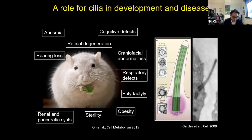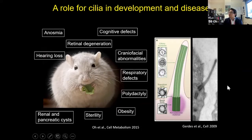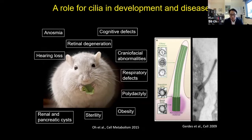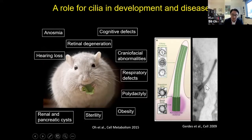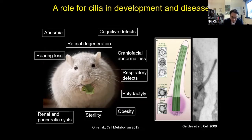Traditionally, over the last 10 years, my lab has had an interest in interrogating a role for the primary cilium in development and disease. This structure is shown here on the right — a cartoon depicting the microtubule structure and a transmission electron micrograph of what it looks like. It's approximately 2 to 3 microns long in some cell types and about 1 micron wide, present in just about every cell type. Over the last 10 to 20 years, we and others have shown it's absolutely important for development and paracrine signaling pathways.